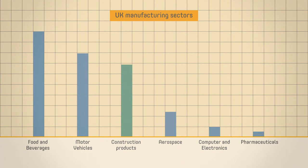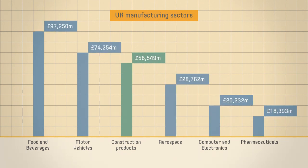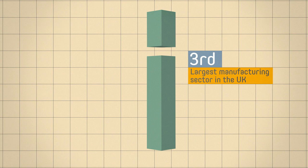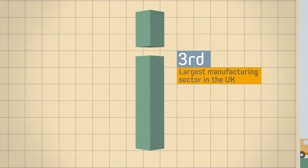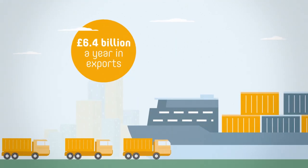The construction products industry makes a vast economic contribution, accounting for the third largest manufacturing sector in the UK and 6.4 billion pounds a year in exports.